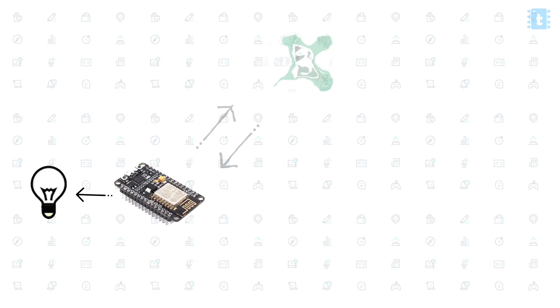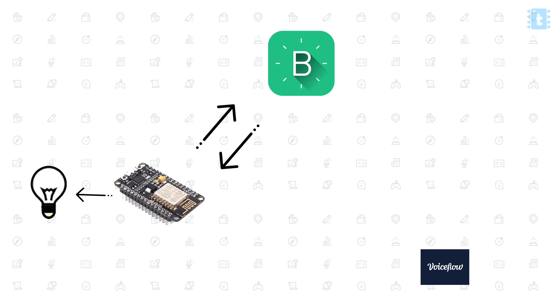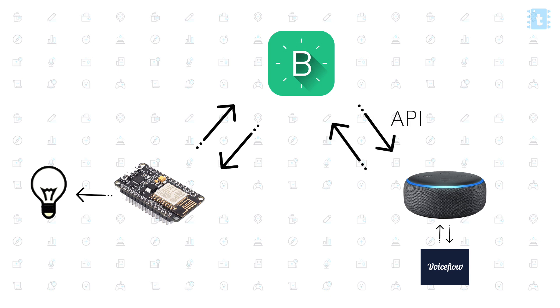Let's get started. If I give you a basic overview about how the voice application will be working: the appliances connected to the NodeMCU port are already connected with the Blynk IoT server, meaning we can already control those appliances using the Blynk application. In the voice application, we'll be making it so that according to our voice commands, a particular API link will be requested, and according to that API link, the appliances will get turned on and off.